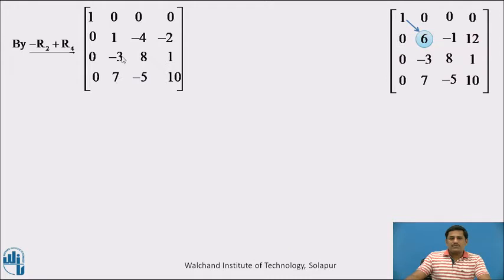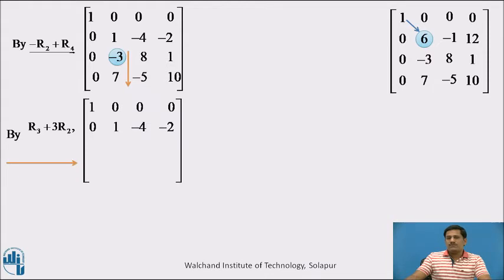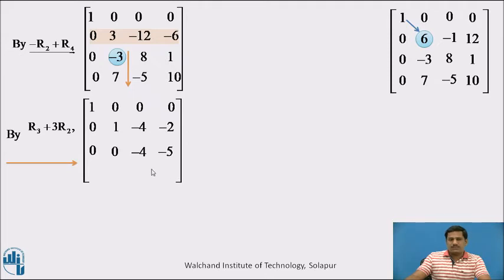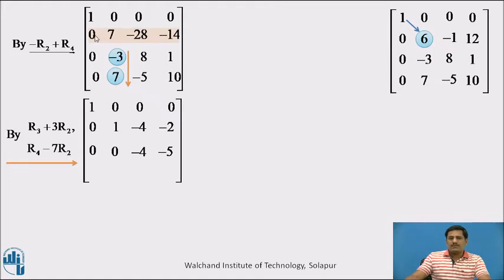Next we reduce the remaining entries to 0. First, minus 3: we use R3 plus 3R2. Multiplying row 2 by 3 gives these entries; adding: first two entries are 0, minus 12 plus 8 is minus 4, minus 6 plus 1 is minus 5. The next entry is 7, so we apply R4 minus 7R2. Multiplying row 2 by 7, then subtracting: first two entries are 0, next minus 5 minus minus plus 28 is 23, and 10 minus minus plus 14 is 24.